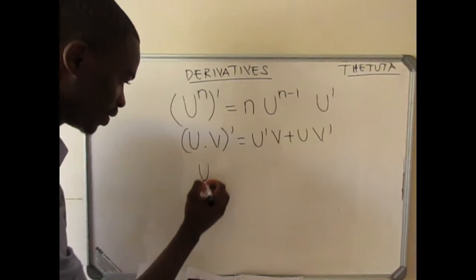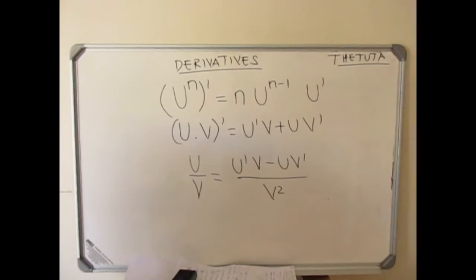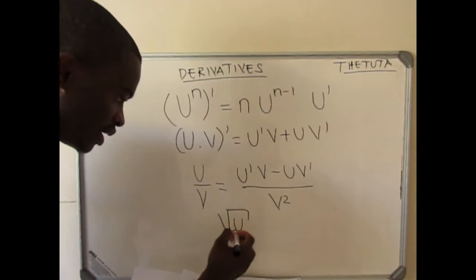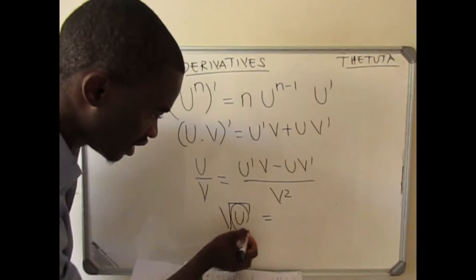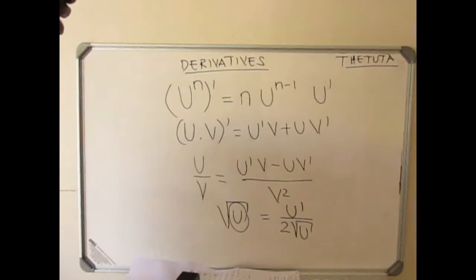And then you have your quotient rule — this will be your formula. What's going to happen is you derive the first function v minus u, you derive v and then v becomes squared. Another one to keep in mind is when we have to derive a square root: just take the function inside the square root, derive it, and divide by 2 over that square root.